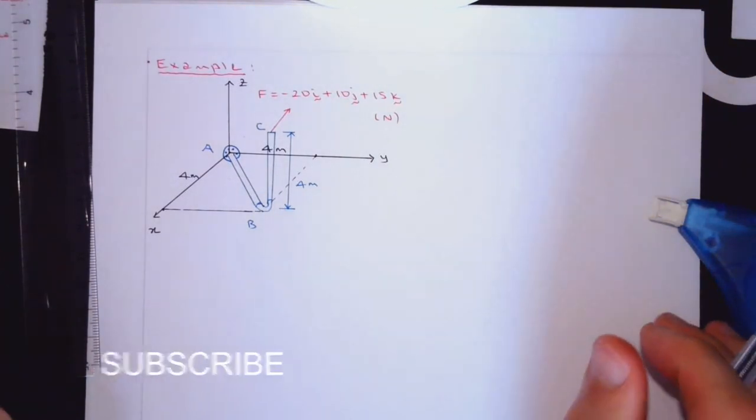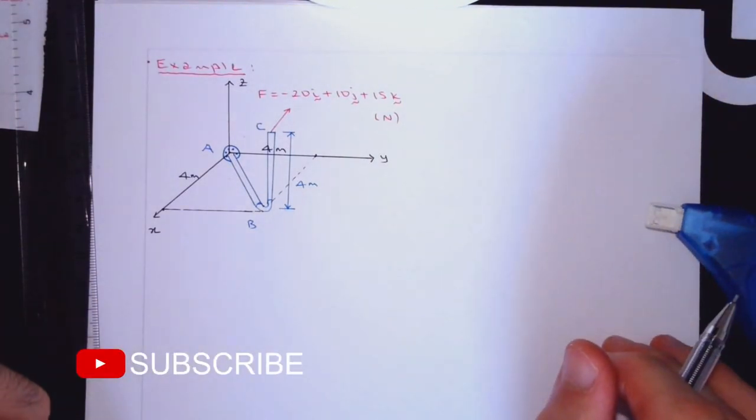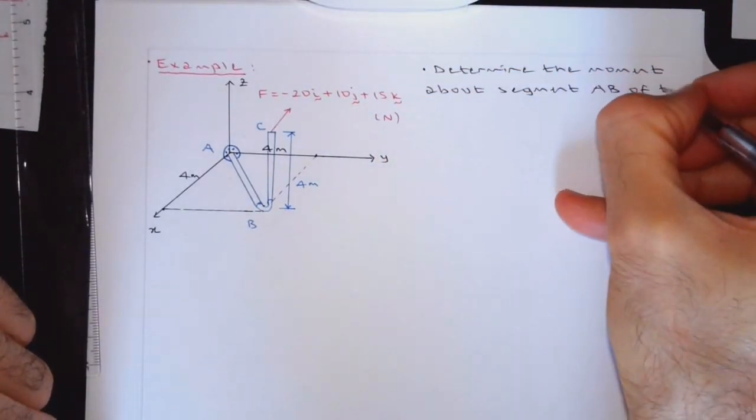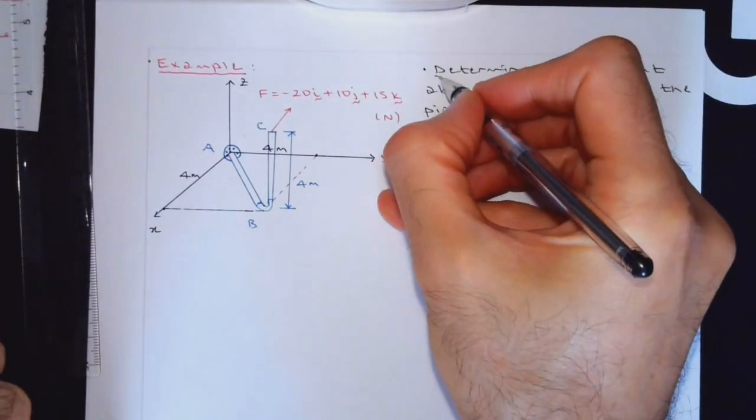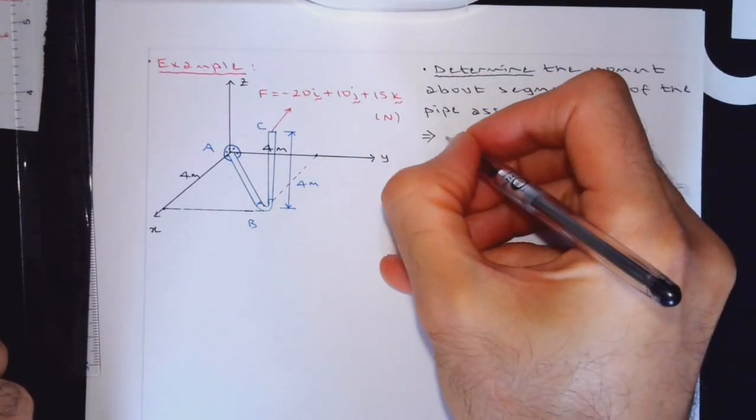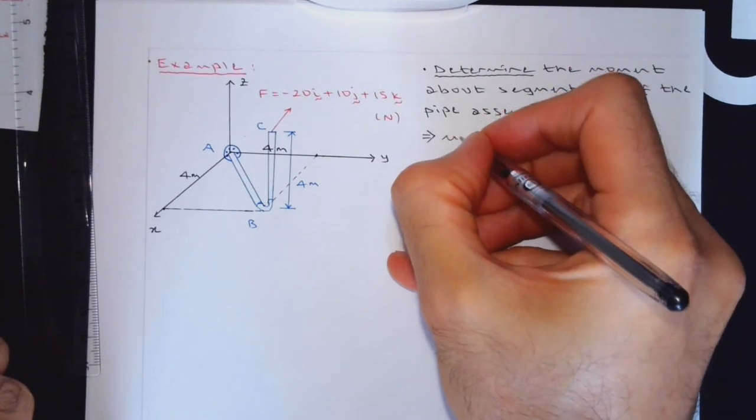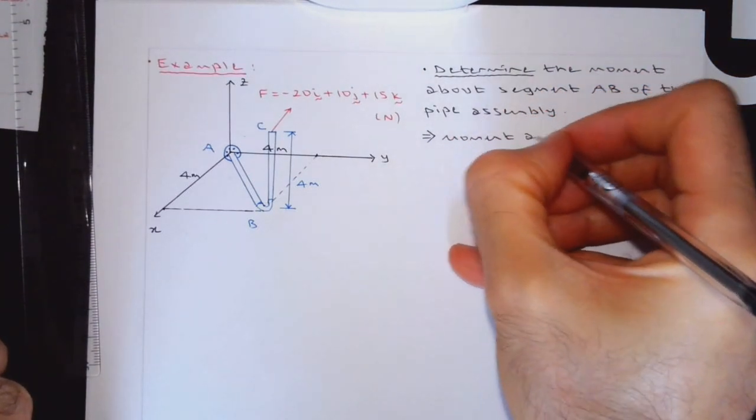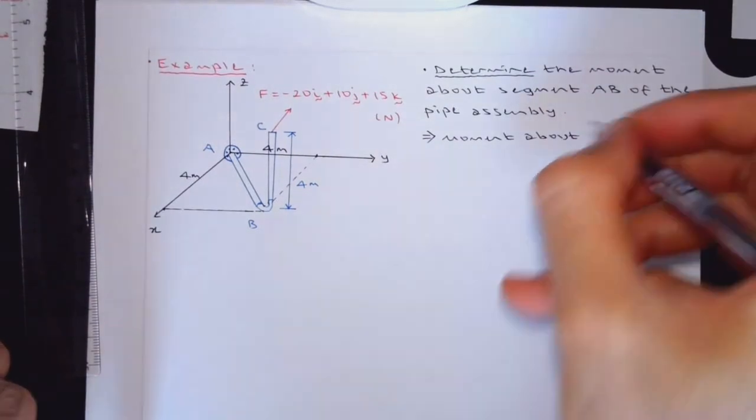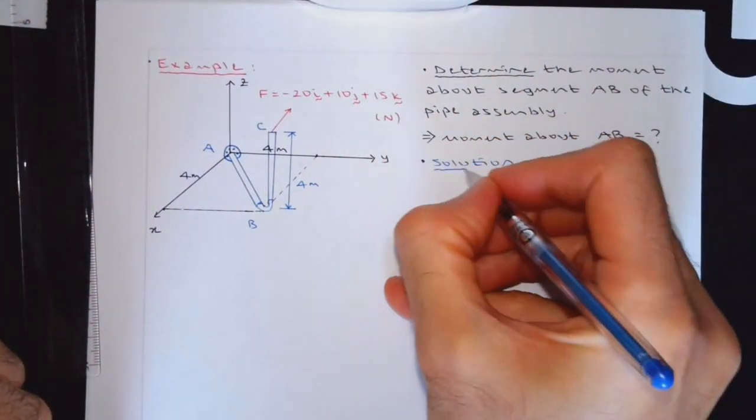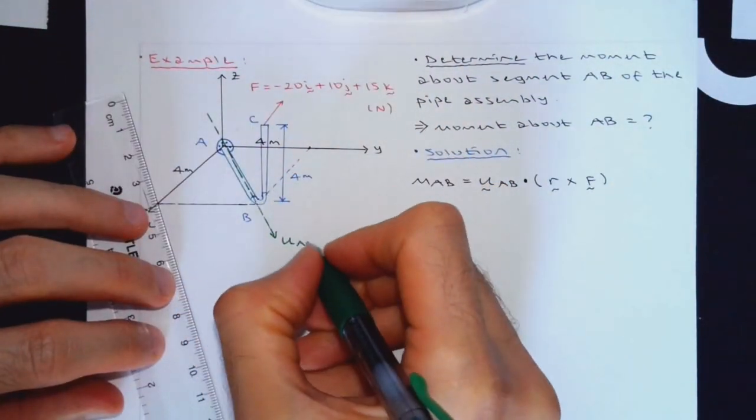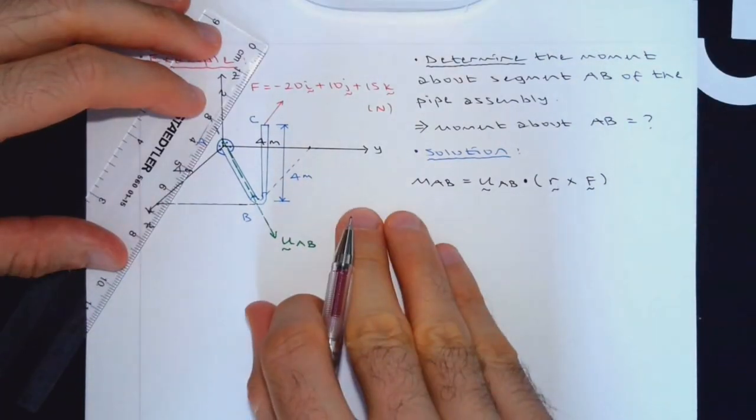The question is determine the moment about segment AB of the pipe assembly. You should understand the language. What it is asking is a moment about AB.